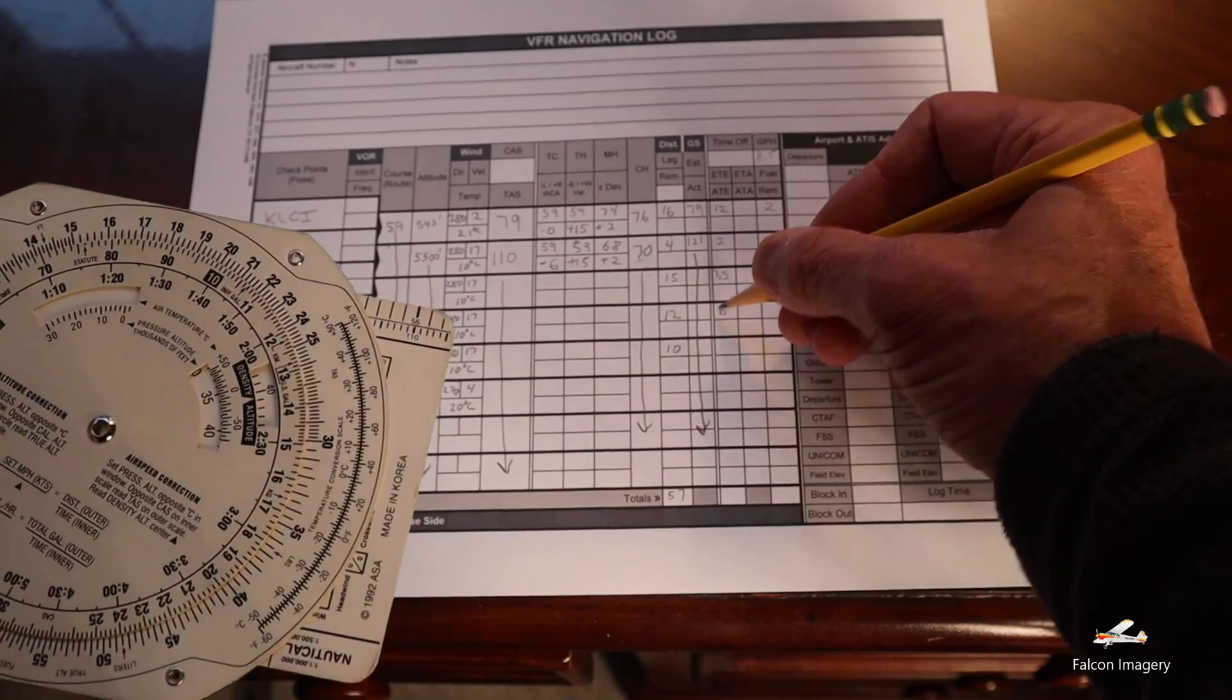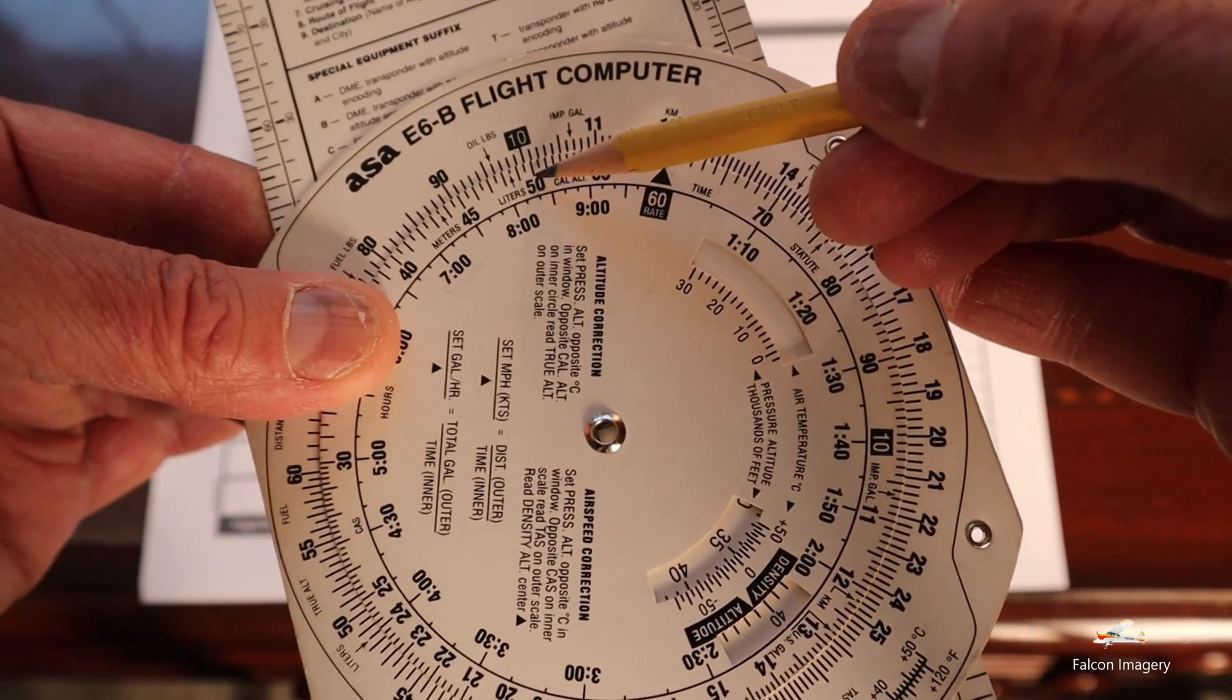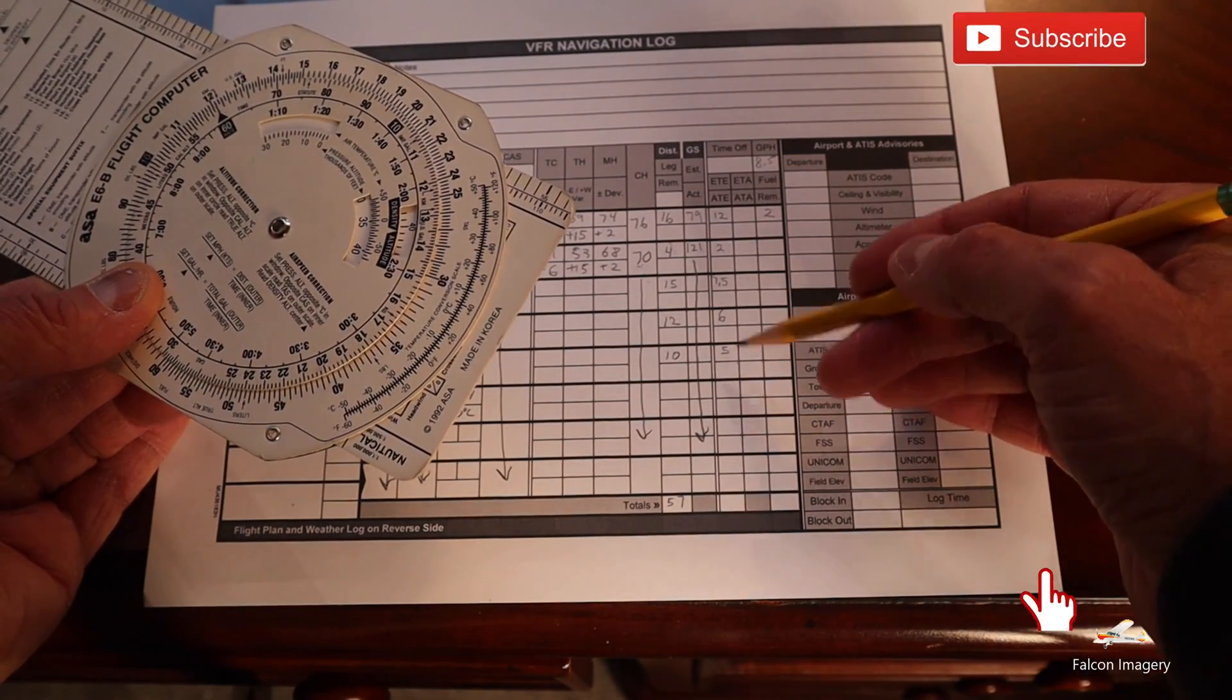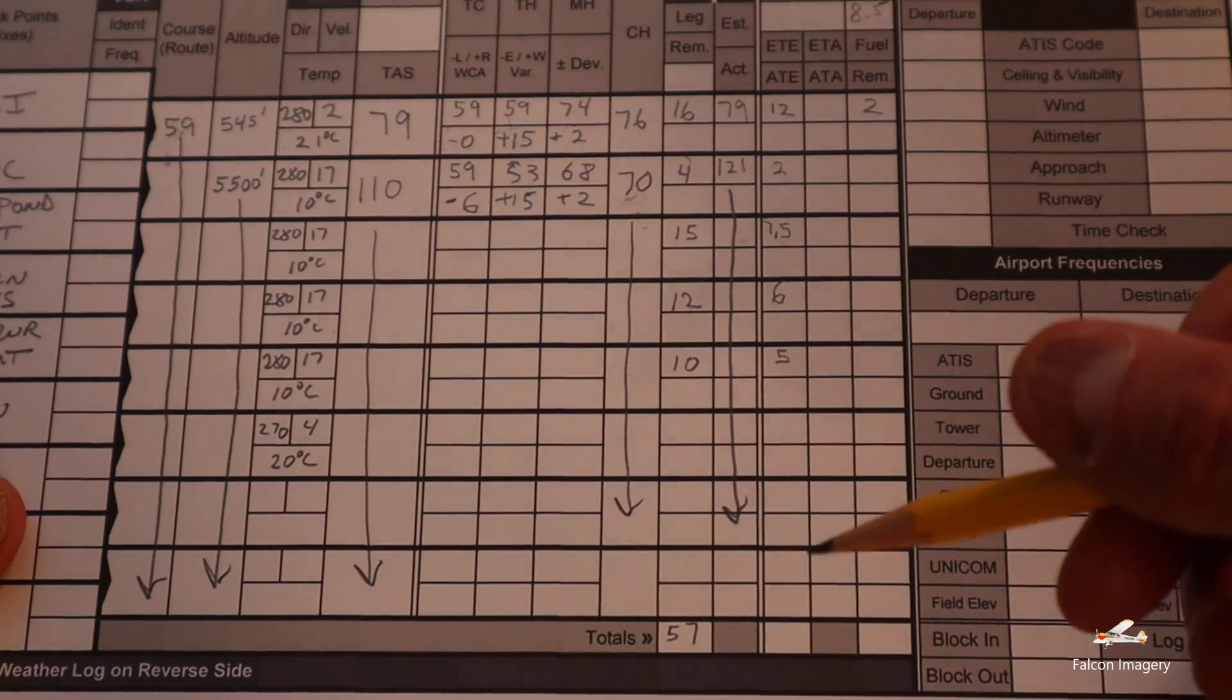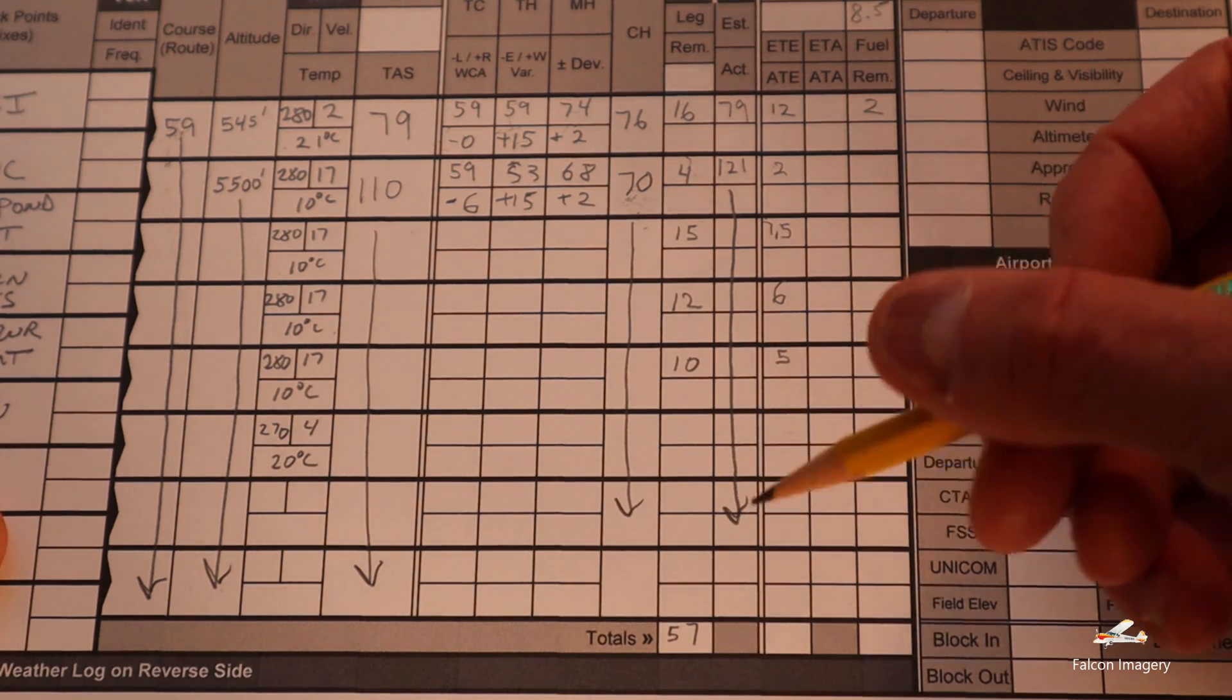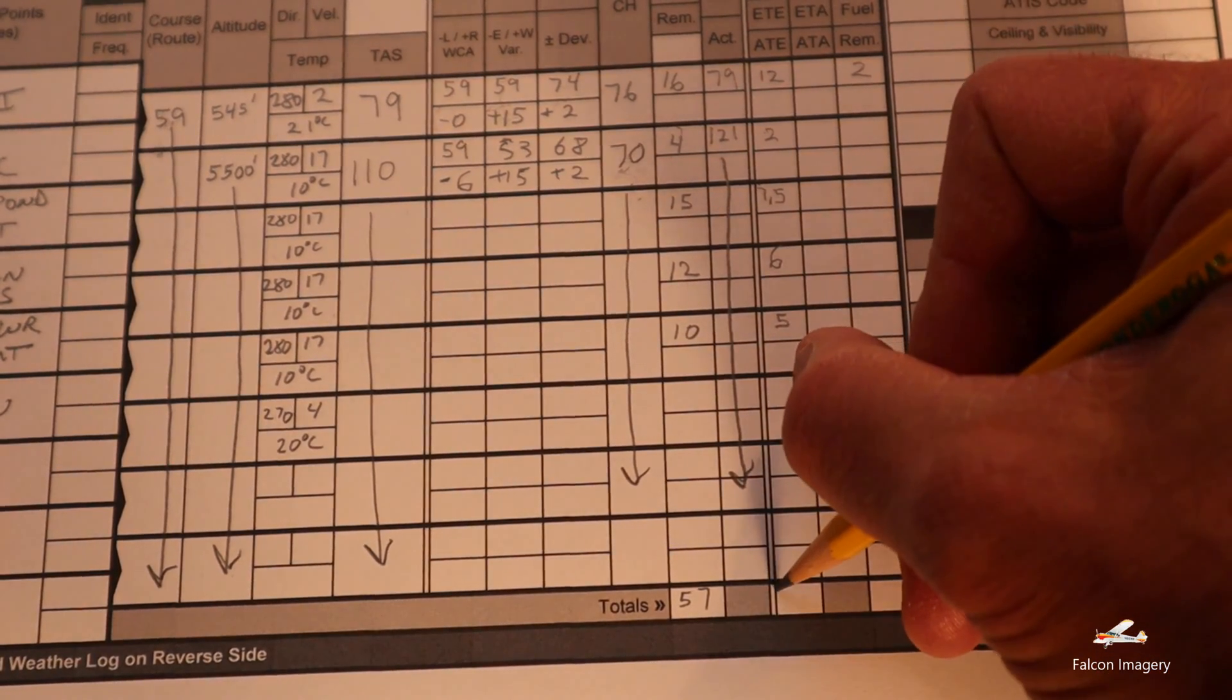And then lastly we have 10 nautical miles. We look at the 10, we look underneath—looks like it'll take us about 5 minutes. So add these times up and we'll know what our total length of time is for this trip. The total length of time to go from Laconia to Auburn Lewiston, Maine, based on these wind conditions and flying at 121 ground speed plus the 79 ground speed for the initial top of climb, works out to 32.5 minutes.